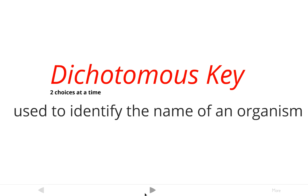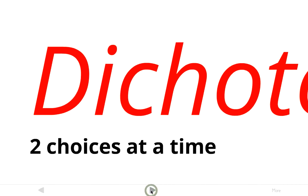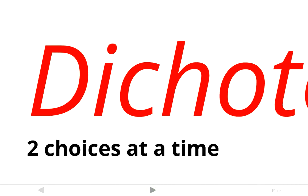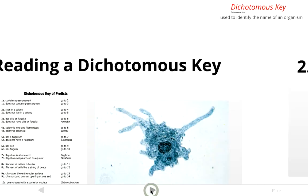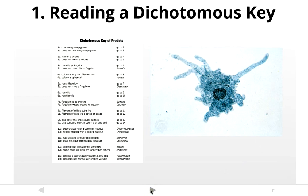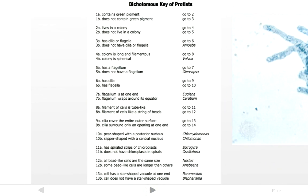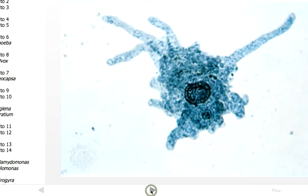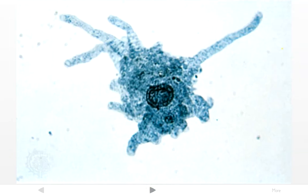So that's how dichotomous keys work — two choices at a time. The first thing you're going to need to be able to do with a dichotomous key is to read it. Here's an example of a dichotomous key for protists, and we're going to use it to identify this organism. Imagine this is the organism you found and you're trying to figure out what its name is.